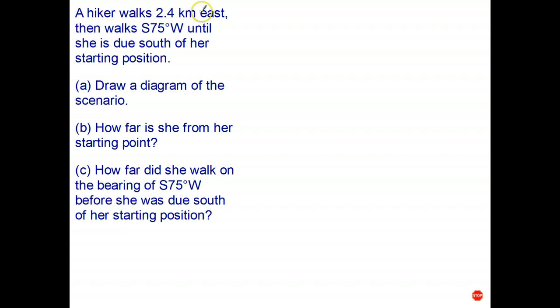Let's read the question together. A hiker walks 2.4 kilometers east, then walks south 75 degrees west until she is due south of her starting position. Draw a diagram of the scenario. Let's stop there and get that done.